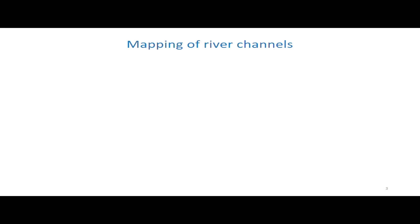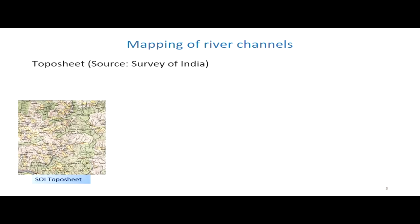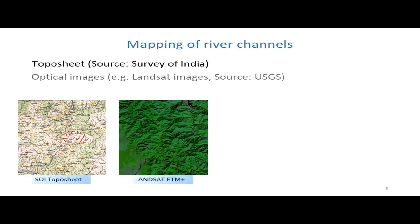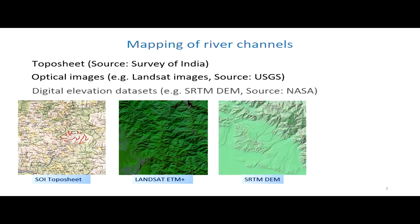So what are the current techniques for mapping river channels? One way is using topo sheets — for example, the Survey of India topo sheet — but the limitation is that these topo sheets generally do not carry information about lower-order streams, particularly first-order channels. Another approach could be optical images, but again there is an issue of resolution: for lower-order streams we require very high-resolution imagery, which is not freely available. So one method is using digital elevation models, and we have used this approach in our study.